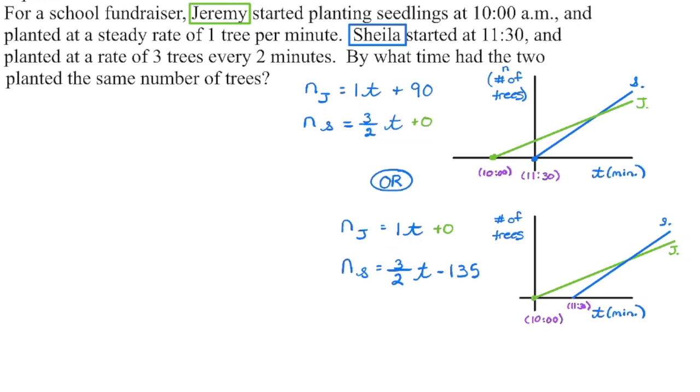He still is planting at the same rate. Sheila, however, is also planting at the same rate, but she is 135 trees behind Jeremy. So right now, if I were to take this line and extend it down here, she's going to have a y-intercept of negative 135. She has not yet begun. In 90 minutes at a rate of one and a half trees per minute, if we go 90 times one and a half, that's where we get this value. Either way, we're going to get the same solution.